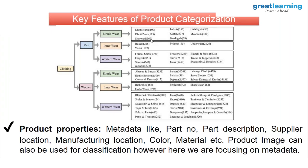You can also have other data such as which supplier provides the product, where it's manufactured, the color, and the material. You may have lots of features related to the product as part of your metadata, which can be used to build machine learning models. Nowadays we also use images of a product along with the metadata. At times, the image really benefits categorization, but at times it may not — so it's always about a good balance between metadata and image data.